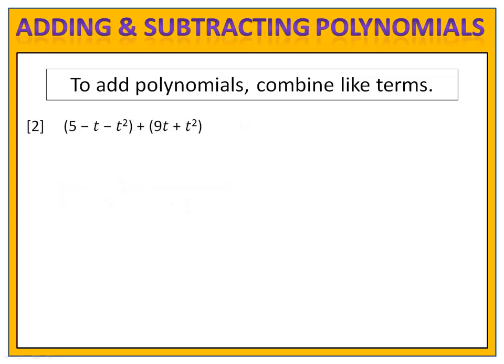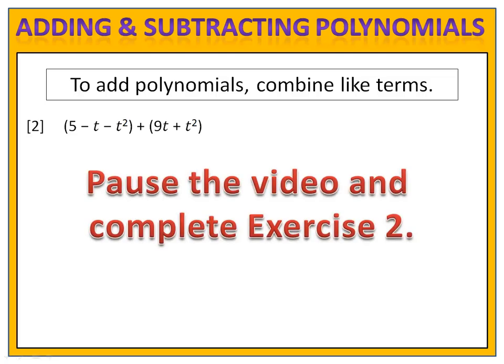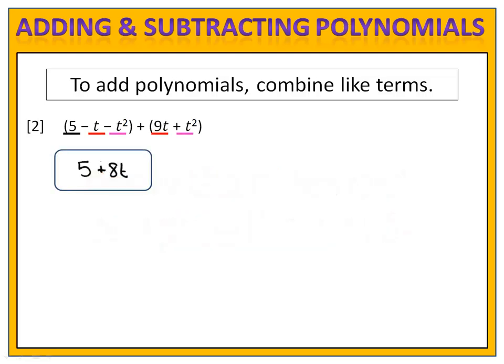In exercise 2, we once again have two polynomials that we wish to add. This is for you to try — identify the like terms and combine them. Please pause the video here and complete exercise 2. We see that we have several like terms: negative 1t and positive 9t which gives us 8t. We also have negative 1t squared and positive 1t squared which gives us 0t squared. Our final expression in simplest form is 5 plus 8t.